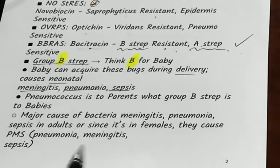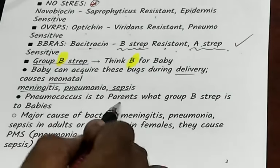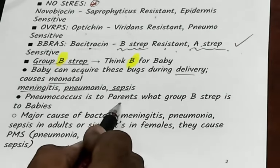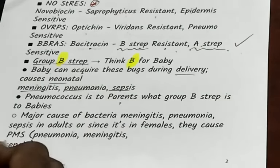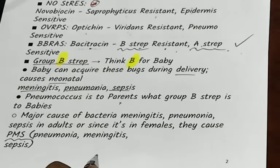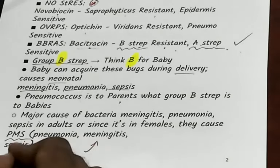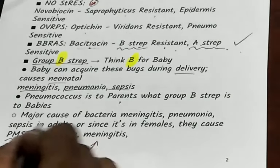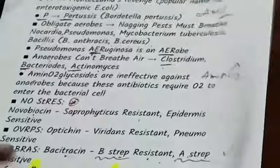Pneumococcus — P for parents, adults. Remember: P for pneumonia, M for meningitis, S for sepsis — all caused by pneumococcus.